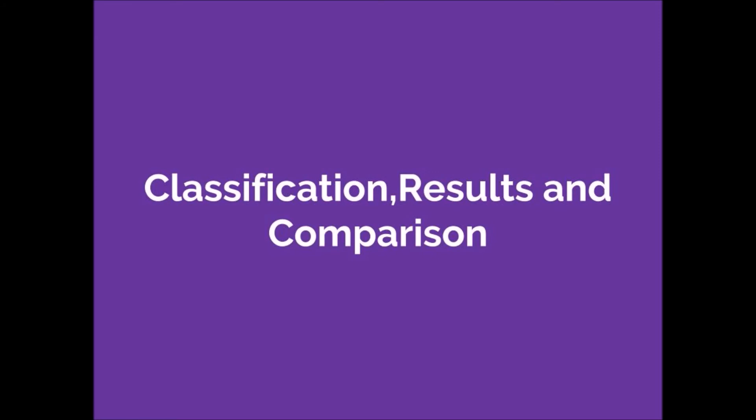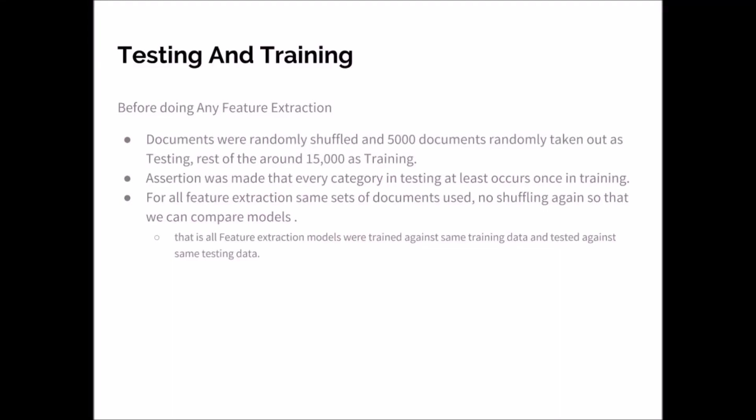Coming to classifier results and comparison. For test and train, we randomly divide 5000 documents into test documents and rest around 20000 into training.